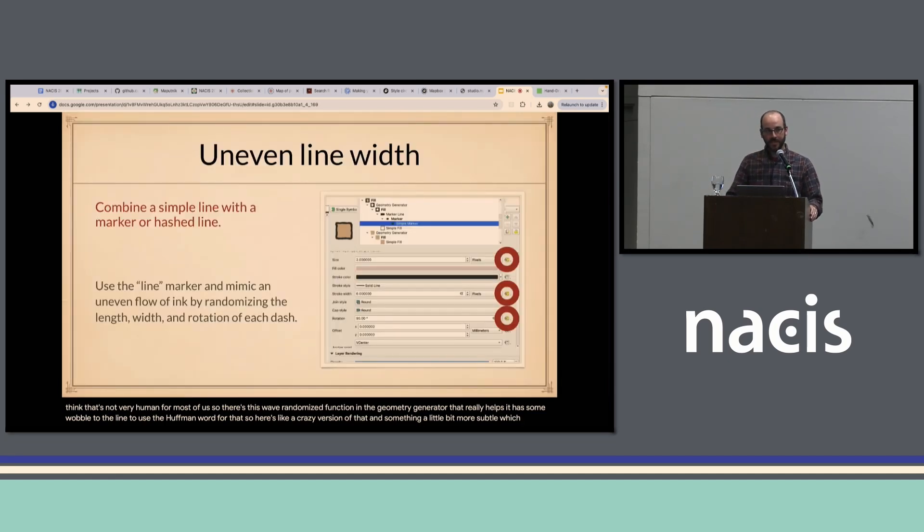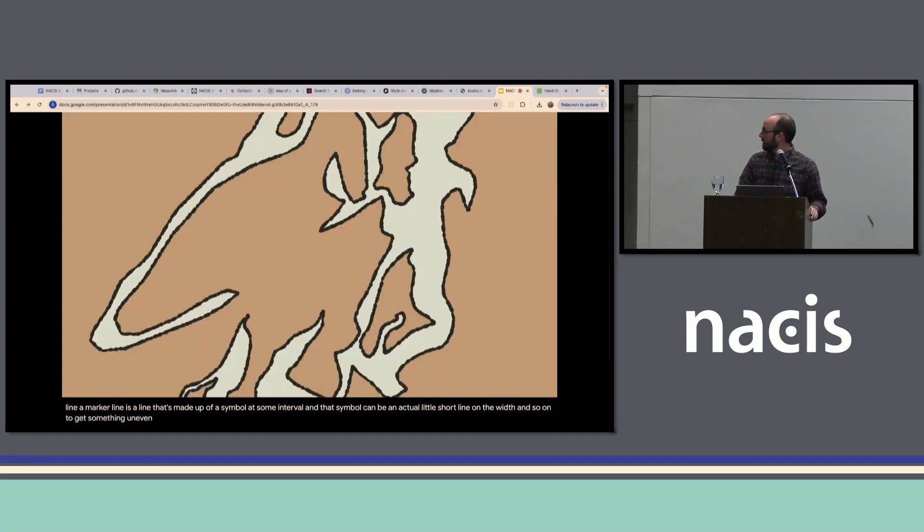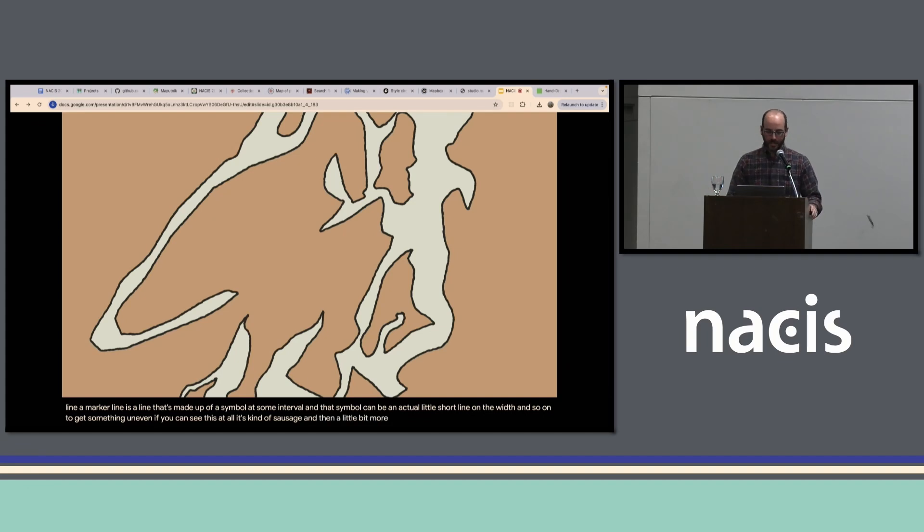A line doesn't also need to have an even thickness. Like I said, it's hard to apply ink evenly to the page perhaps. Or maybe the antique look you're going for is of a technology that wasn't good at applying ink in a perfect crisp line. And so the way I do that is usually a simple line and then on top of that or under it is a marker line. A marker line is a line that's made up of a symbol at some interval. And that symbol can be an actual little short line. And then for each of those symbols you can do some randomizing on the width and so on to get something uneven.